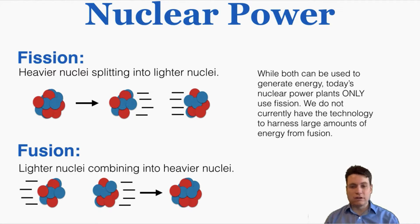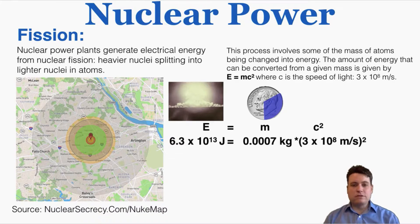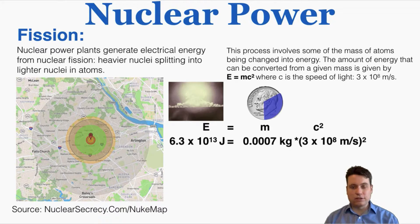We do not have the technology to harvest large amounts of energy from fusion yet, but if we're able to figure that out, it's going to be probably one of the biggest events in human history because it will unleash so much new usable energy. When an atom fissions and splits into smaller parts, some of its mass is actually lost as energy — mass is changed into energy. This is a violation of the conservation of mass and the conservation of energy, because mass is being destroyed and energy is being created.